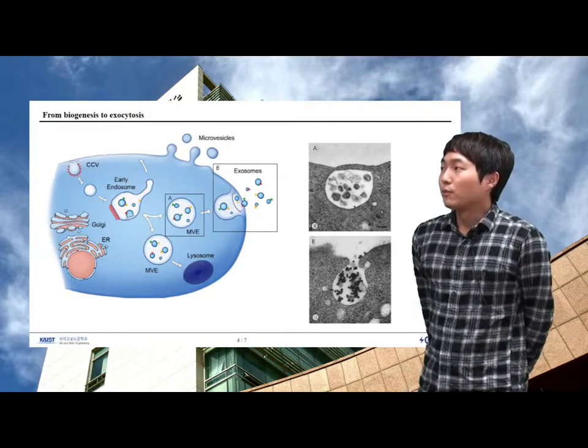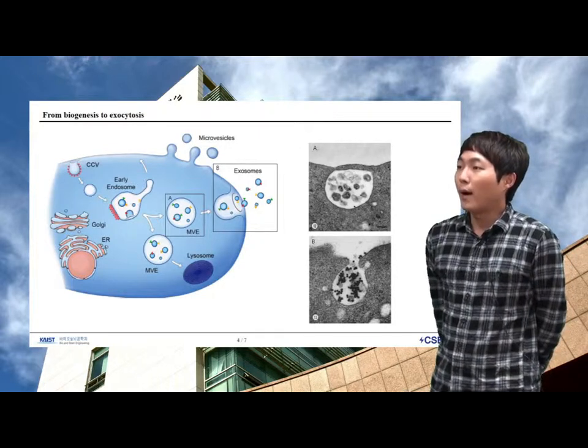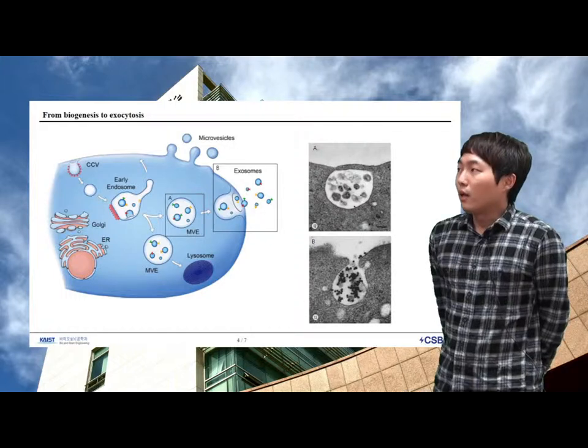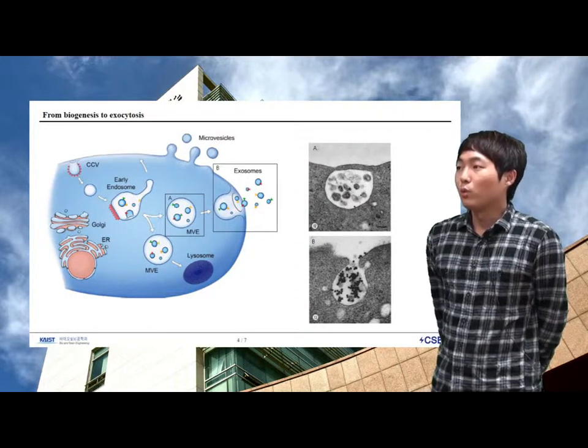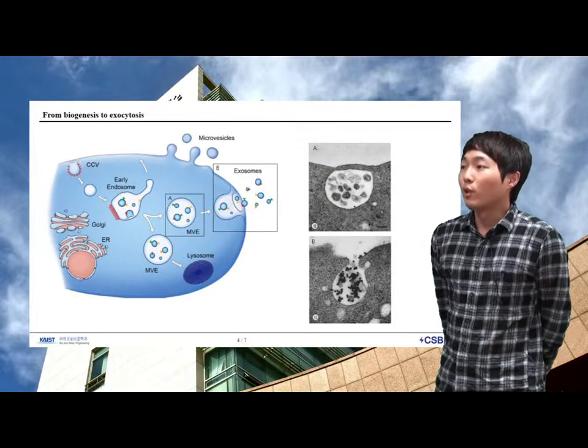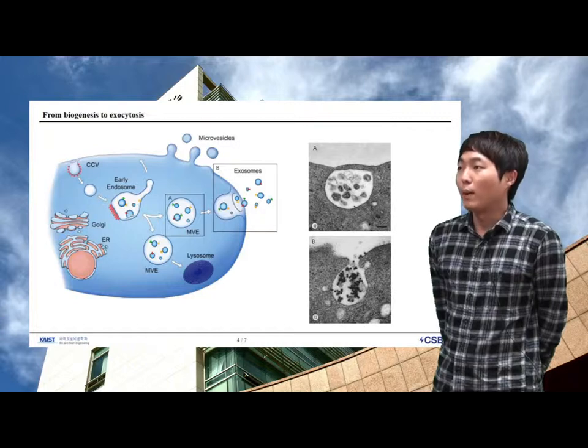Multivesicular endosomes bud directly from the plasma membrane, whereas exosomes are represented by small vesicles of different sizes that are formed as intraluminal vesicles by budding into early endosomes and multivesicular endosomes and are released by fusion of multivesicular endosomes with the plasma membrane.